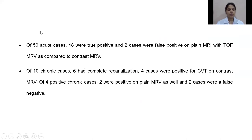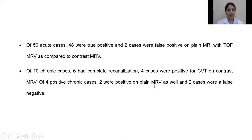Of the 50 acute cases, 48 were true positive and 2 cases were false positive on plain MRI with contrast. Of the 10 chronic cases, 6 had complete recanalization and 4 cases were positive for CVT on contrast MRV. Of the 4 positive chronic cases, 2 were positive on plain MRV and 2 cases were false negative.